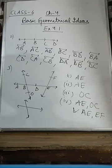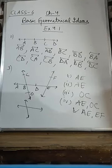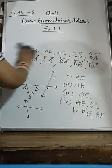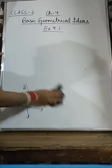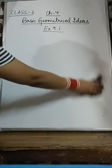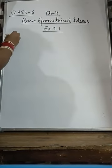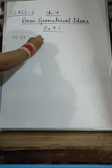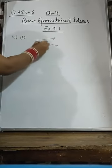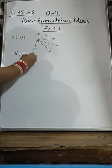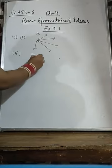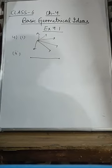Question number 4: from one point, how many lines can be drawn? Infinitely many lines — from one point we can draw infinitely many lines. In the second part, if we have two points, how many lines? Only one line — this is your unique line.